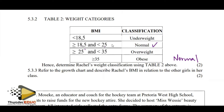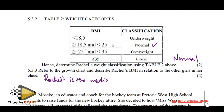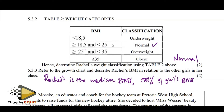Refer to the growth chart and describe Rachel's BMI relationship to other girls. Rachel's BMI is the median BMI. 50% of girls of her age have a BMI above 21 and 50% have a BMI below 21.